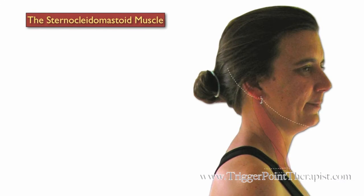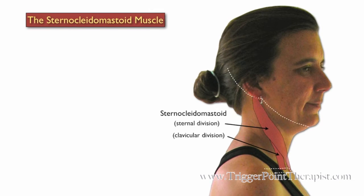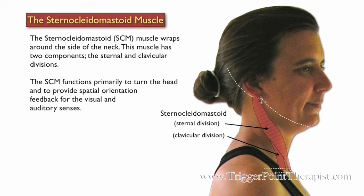The Sternocleidomastoid Muscle, or SCM, wraps around the side of the neck. This muscle has two components: the sternal and clavicular divisions. The SCM functions primarily to turn the head and to provide spatial orientation feedback for the visual and auditory senses.